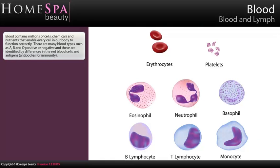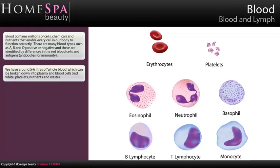Blood contains millions of cells, chemicals and nutrients that enable every cell in our body to function correctly. There are many blood types such as A, B and O positive or negative, and these are identified by differences in the red blood cells and antigens, antibodies for immunity. We have around 5-6 litres of whole blood which can be broken down into plasma and blood cells: red, white, platelets, nutrients and waste.